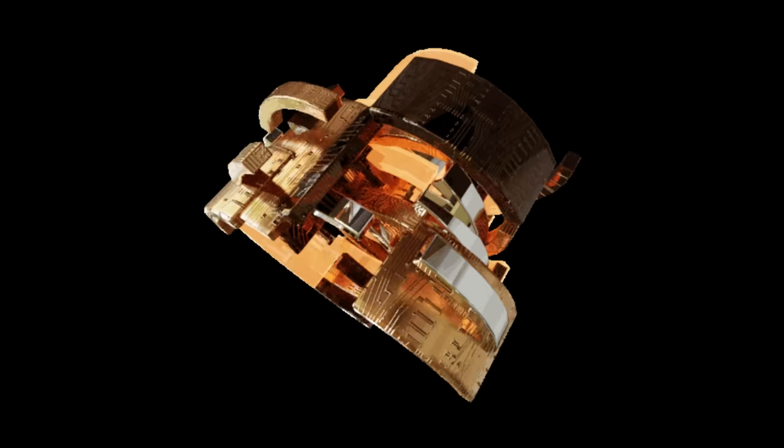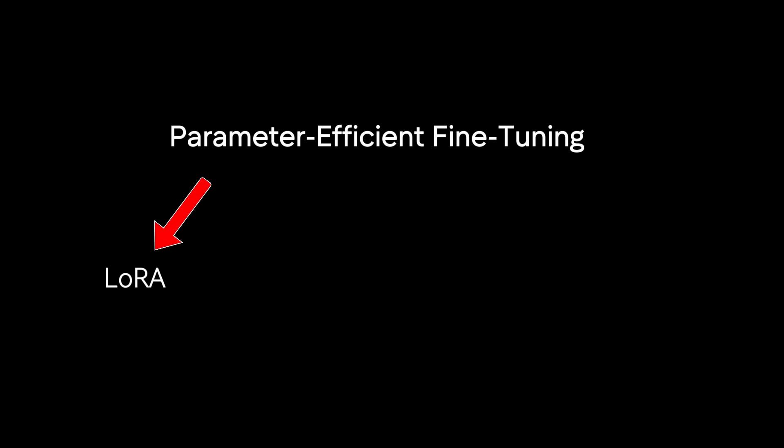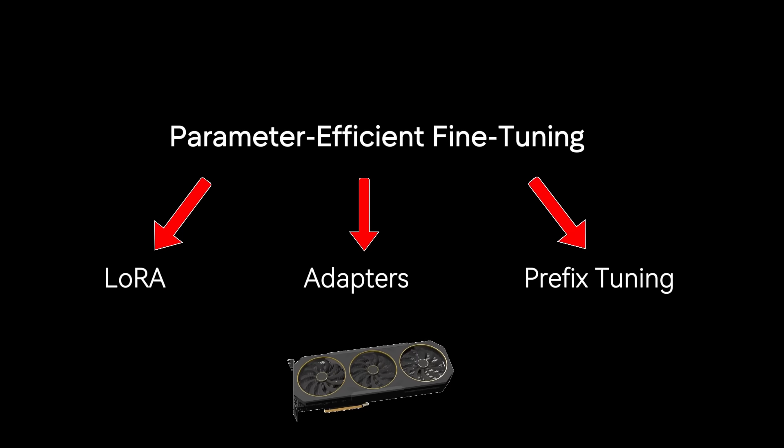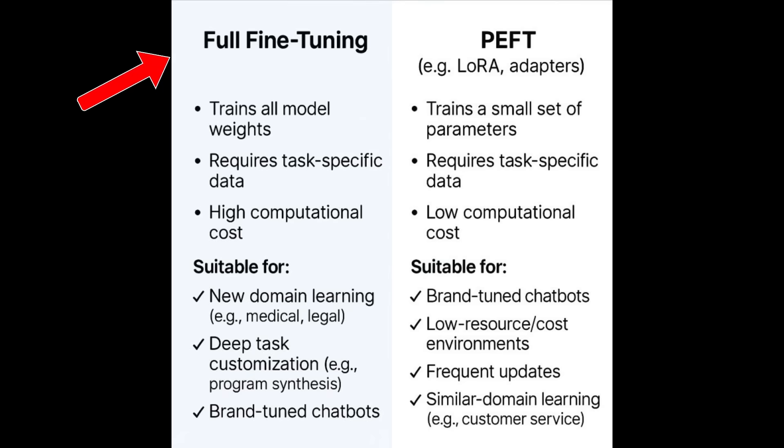Full fine-tuning of LLMs requires thousands of GPU hours, for example eight A100 GPUs for weeks. Then you have LoRa, adapters, and prefix tuning. This can be done on a single consumer GPU with hours of training. Fine-tuning is a spectrum, which I'm also on, from updating all parameters which is powerful but expensive to lightweight PEFT methods like adapters, prefix tuning, and LoRa that are efficient and practical.